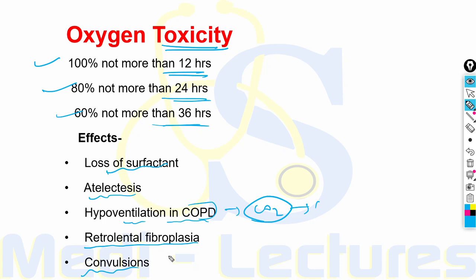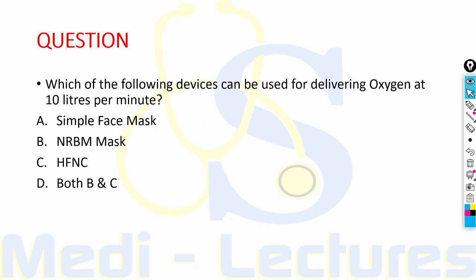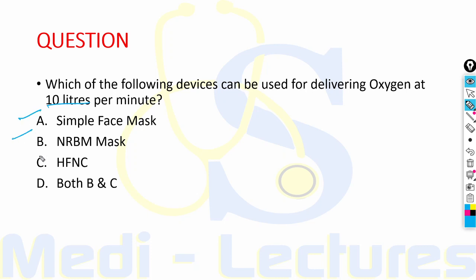Question of the episode: Which of the following devices can be used for delivering oxygen at 10 liters per minute? Options: simple face mask, NRBM mask, high flow nasal cannula, or both NRBM mask and high flow nasal cannula.